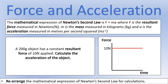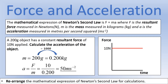Example two: a 200-gram object has a constant resultant force of 10 newtons. Calculate the acceleration. First, we must convert the mass to kilograms by dividing by 1000, since there are 1000 grams in a kilogram — giving us 0.200 kg. Now using a = F/m: force is 10 newtons, mass is 0.2 kg, giving us an acceleration of 50 meters per second squared.